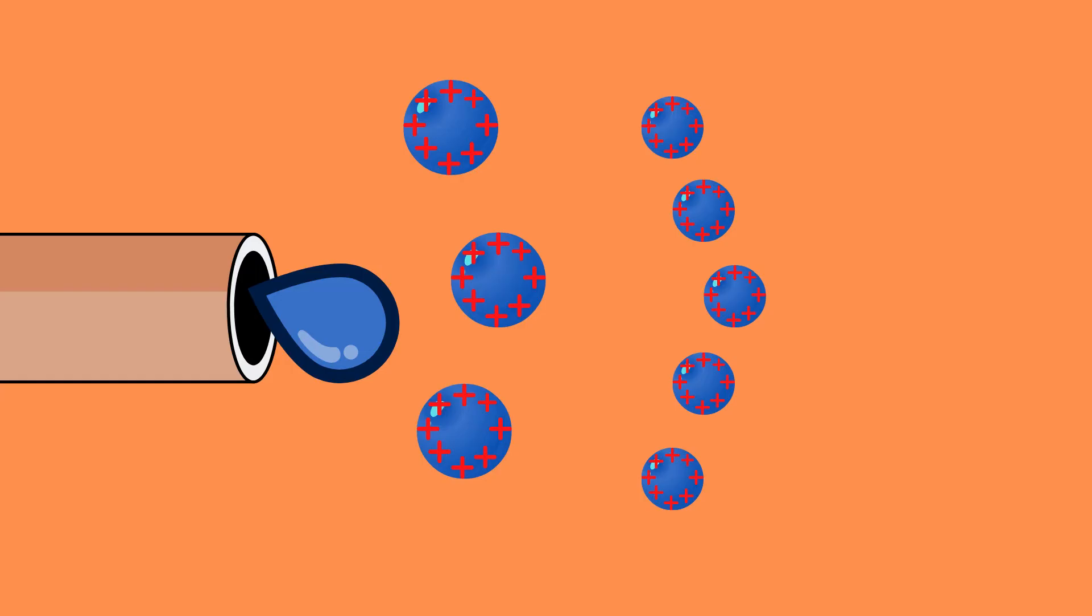When this charge becomes too great, the Coulomb repulsive forces within them exceed the surface tension and this causes them to undergo fission, or in other words divide into even smaller charged droplets.